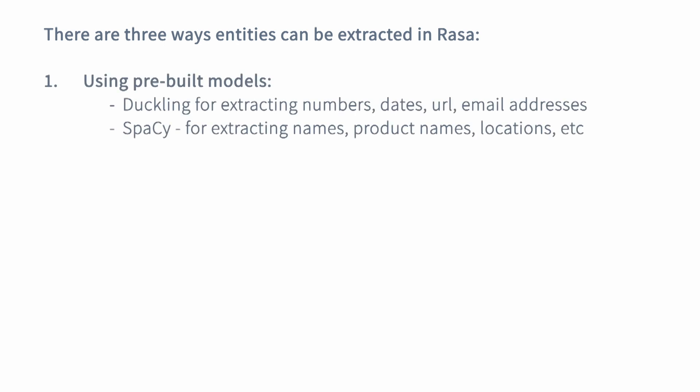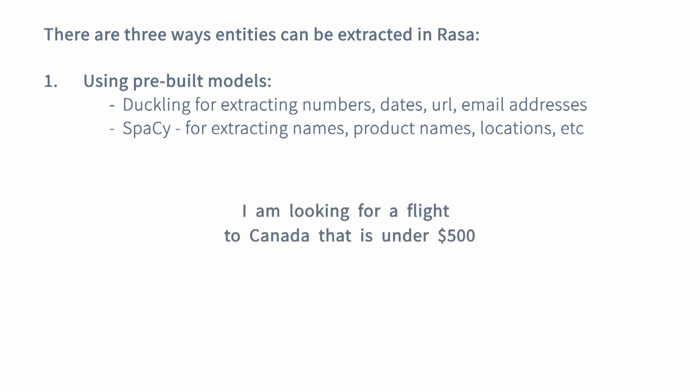The first approach is using pre-built models. Rasa enables you to use pre-built models to enhance the entity extraction results without requiring you to have loads of labeled data. For example, a tool called Duckling is an extremely powerful approach for extracting entities like numbers, dates, URLs, and email addresses and similar.